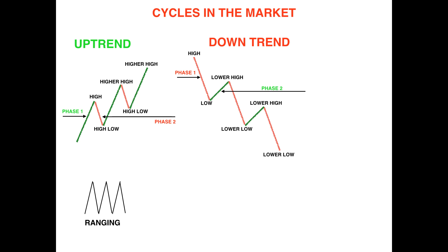Now I want to talk about cycles in the market. There are three types of cycles: an uptrend, a downtrend, and a ranging market. The ranging market I won't focus on as it's just price bouncing between two levels — I'm more of a trend trader. An uptrend consists of a high, a higher low, a higher high, a higher low, and a higher high. A downtrend consists of a low, a lower high, a lower low, a lower high, and a lower low.